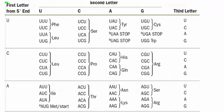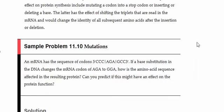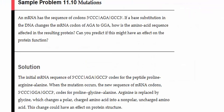By looking at the meaning of the codons, the original sequence codes for proline, arginine, and alanine. When the mutation occurs, the new sequence is proline, glycine, alanine.